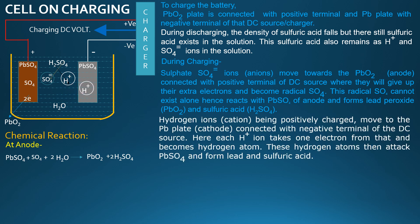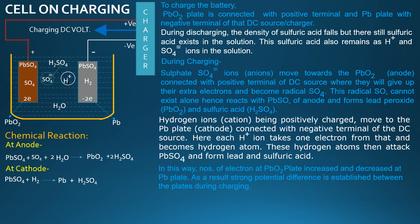Hydrogen ions, being positively charged cations, move to the Pb plate connected with the negative terminal of the DC source. Each hydrogen ion takes one electron from it and becomes a hydrogen atom. These hydrogen atoms then attack PbSO4 and form lead and sulfuric acid. In this way, the number of electrons at the PbO2 plate increases and decreases at the Pb plate. As a result, a strong potential difference is established between the plates during charging.